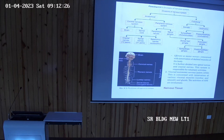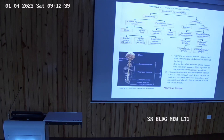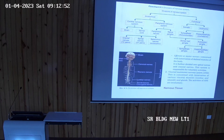Beside the cell body, the neurons also have processes. The processes are of two types: one is a single long process called the axon, and another is short processes that are multiple in number, called dendrites.